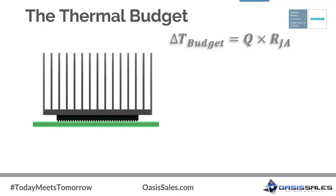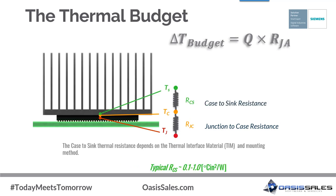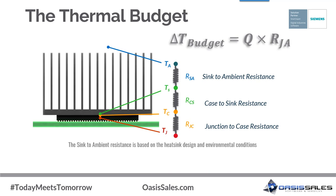The delta T budget is the difference between the maximum allowed junction temperature and ambient temperature. Q is the power dissipation of the device. As a conservative assumption, all heat is assumed to flow into the heat sink base. The first thermal resistance is the junction-to-case resistance; for a typical CPU, this is in the range of 0.1 to 1 K/W. The next is R_CS, case-to-sink thermal resistance associated with the interface material. TIM values are typically presented in terms of bond line thickness and thermal conductivity (L/k). The final resistance is R_SA, the sink-to-ambient thermal resistance, which is a function of the heat sink thermal design.